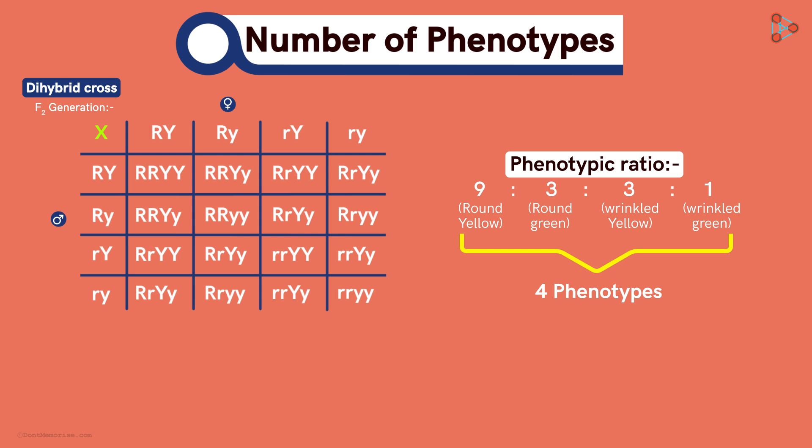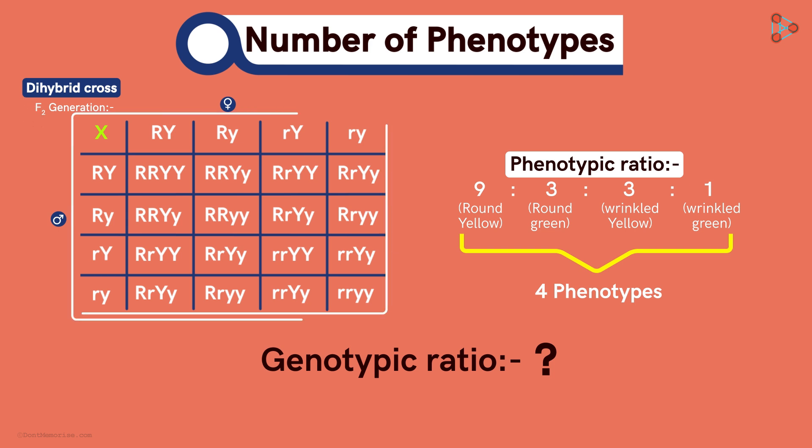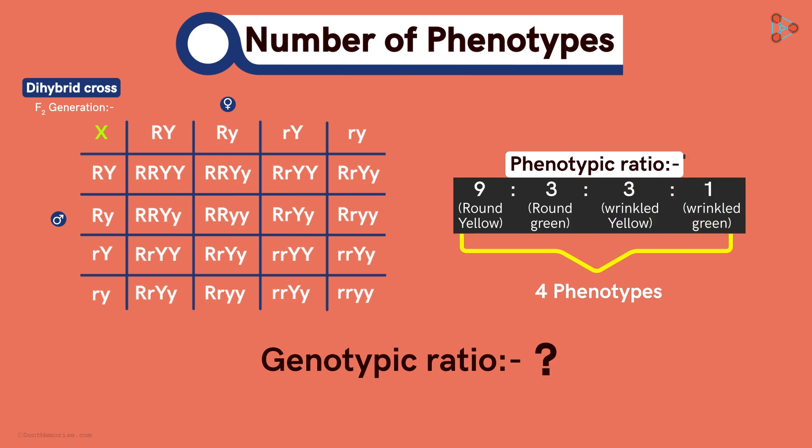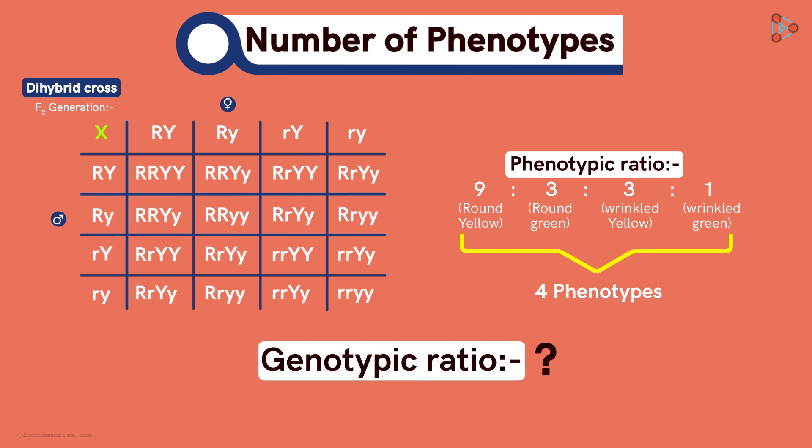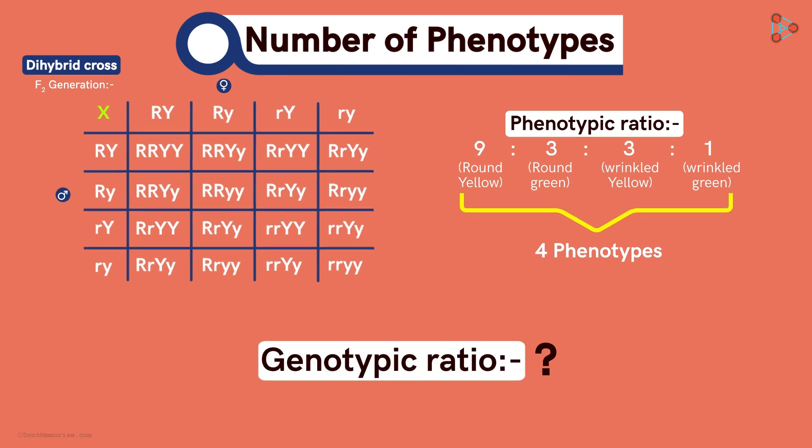Now let's make it a bit more interesting! Can you tell me what's the genotypic ratio obtained in the F2 generation after a dihybrid cross? 9 to 3 to 3 to 1 is the phenotypic ratio! You can pause the video and try finding the genotypic ratio of these offsprings! The answer is tricky!